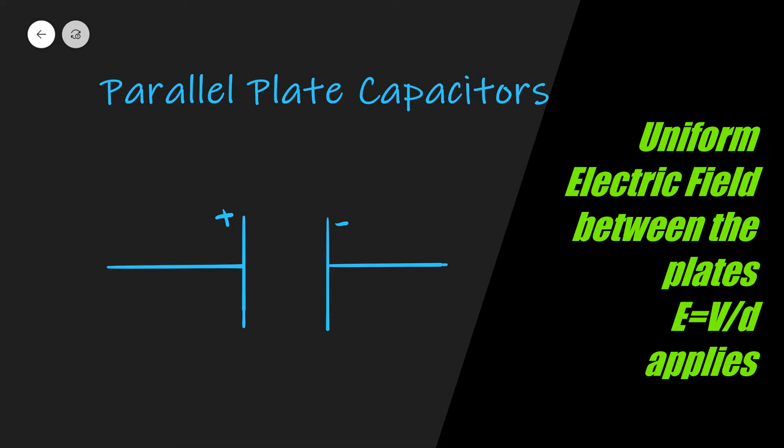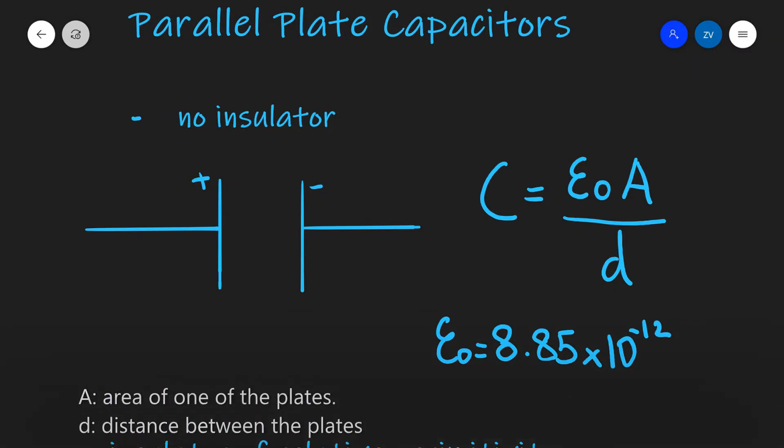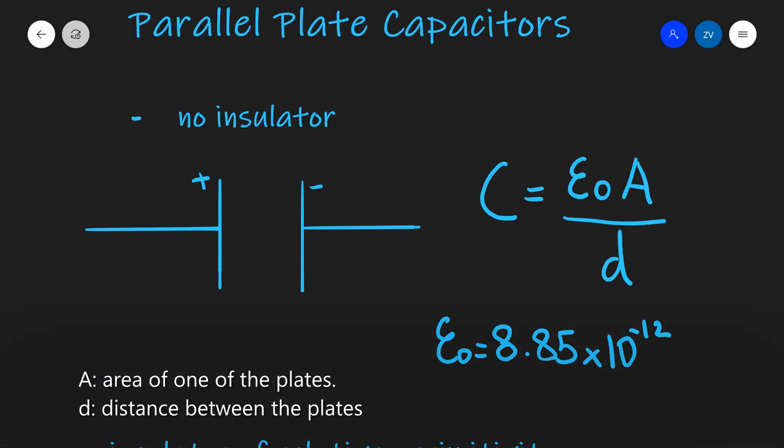Now let's have a look at the equation for the capacitance of this capacitor. In our first case we're going to be looking at a parallel plate capacitor with no insulator between the plates.